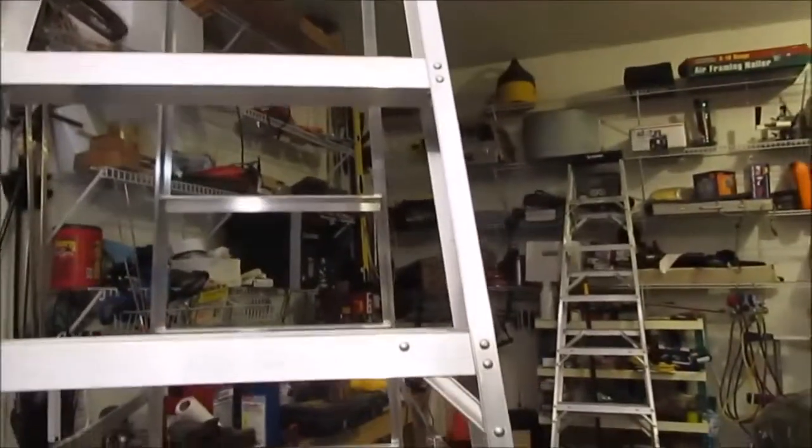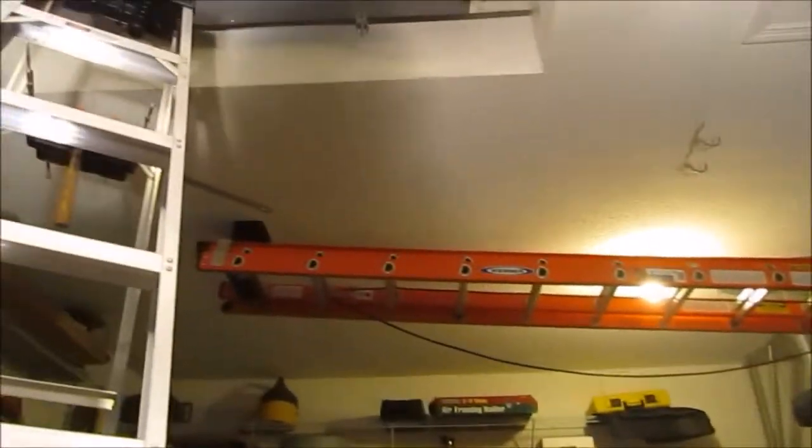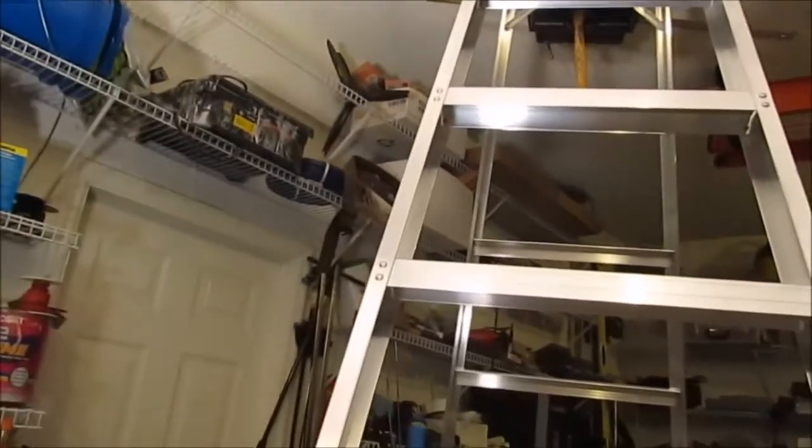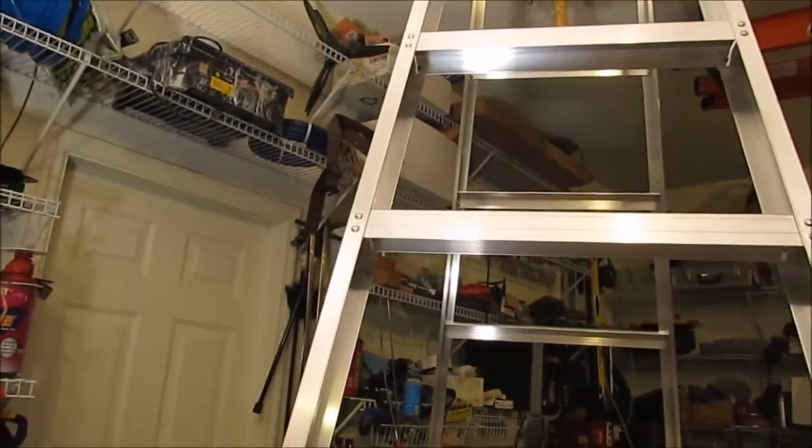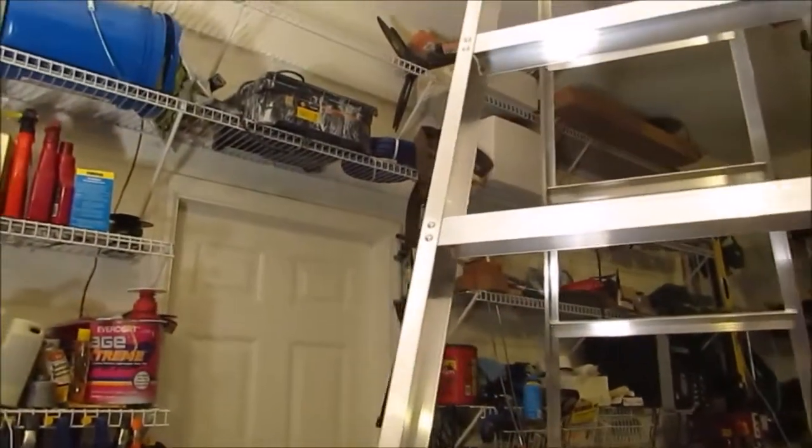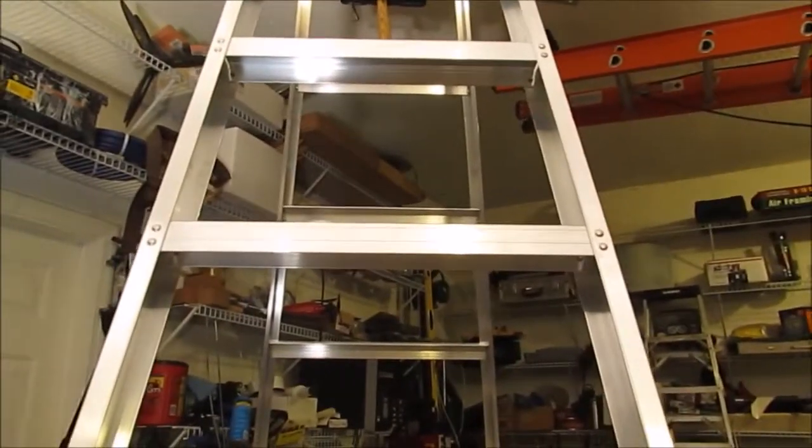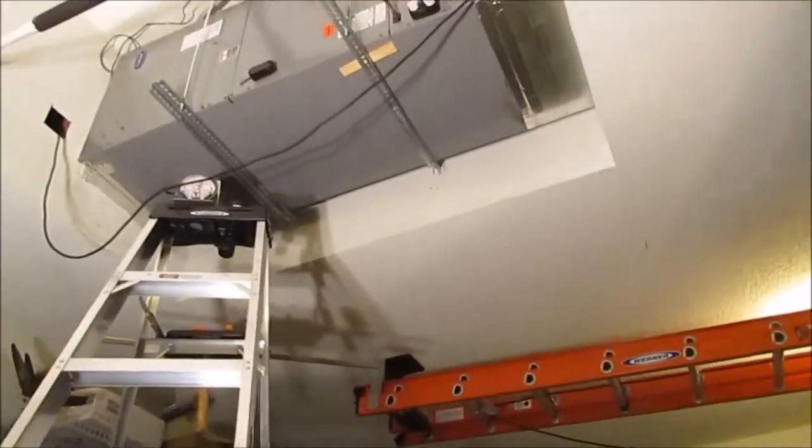There are minor tweaks you can make. If you have vaulted ceilings, you probably have absolutely no access to the ductwork in the attic. Minor things you could do maybe is change an 8-inch register to a 10-inch register to make it a little larger. You'd be working from the inside of the house because you don't have access to your ductwork or attic, so you're kind of stuck with what you have.